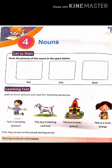Next, we have just studied that the name of a person is a noun — for example, Yash. Yash is jumping — here 'jumping' is an action word, a verb, as we have already studied. Yash is a noun because it's the name of a person. In the second example, the dog is barking. Dog is an animal, and the name of an animal is a noun.